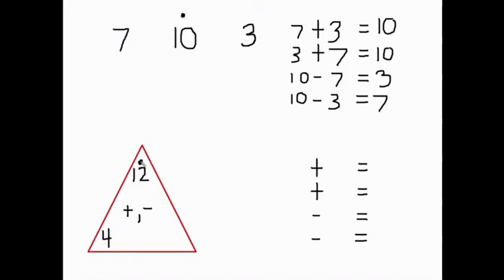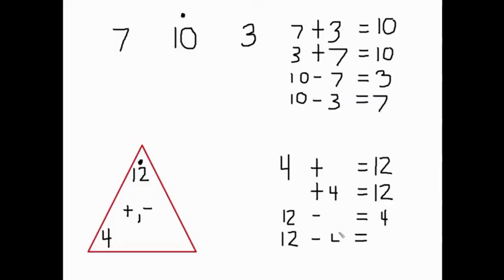Now we have a missing number. We know the total is 12 and we know one of the parts is four, but we don't know the other part. So let's plug in 12 first. We know one of the addends is four, so: four plus some number equals 12, some number plus four equals 12, 12 minus four equals some number, and 12 minus some number equals four. The one we can most easily solve is 12 minus four: 12, 11, 10, 9, 8. So that missing addend is eight. Now you can plug in eight in all the missing spots.